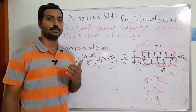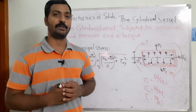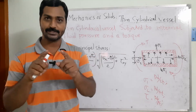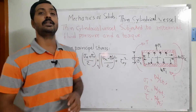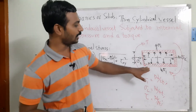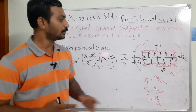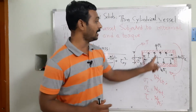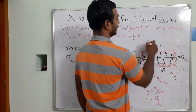When a member is subjected to more than one load — for example, loads acting in the x, y, and z directions — the governing equations may fail when considered individually. In this case, the member is a thin cylindrical vessel subjected to three types of loads: stress in the circumferential direction, stress in the longitudinal direction, and a torque or shear force (τ) acting on the member.